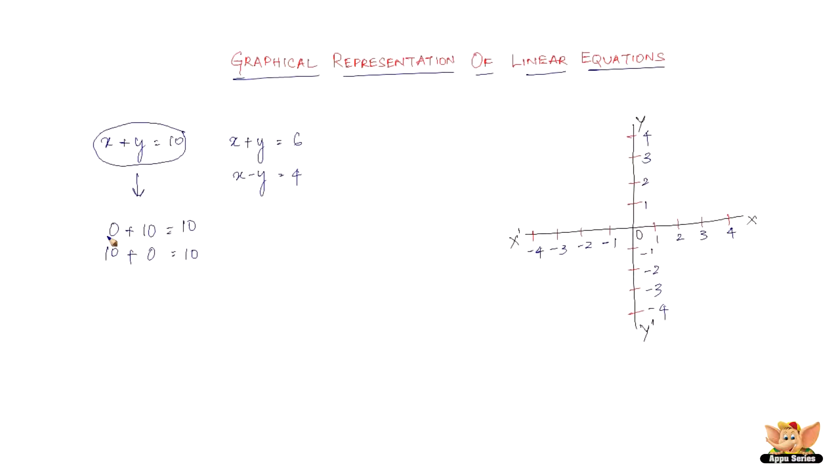These are the values of x and y. When x equals 0, y equals 10. When x equals 10, y equals 0. This is how it works.